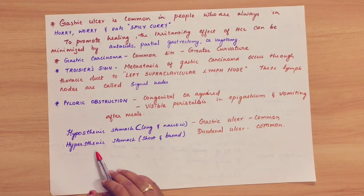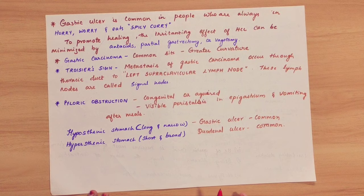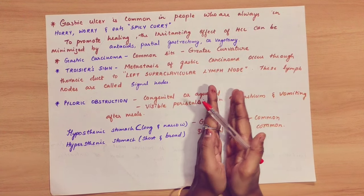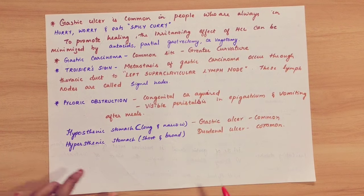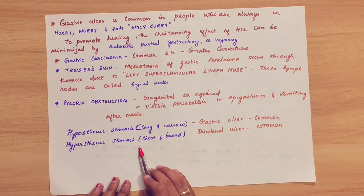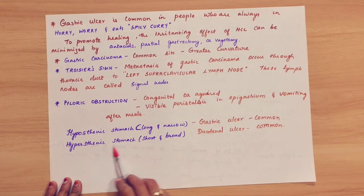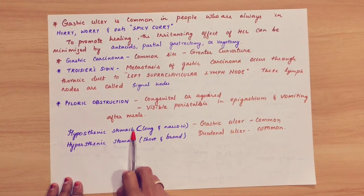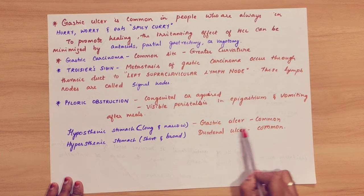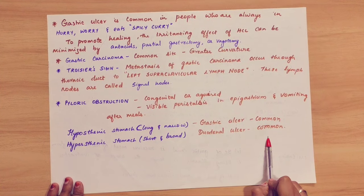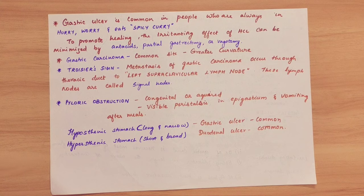There are two types of stomachs — hyposthenic and hypersthenic. Hyposthenic stomach is long and narrow. Hypersthenic stomach is short and broad. This is all about the clinical anatomy of the stomach.